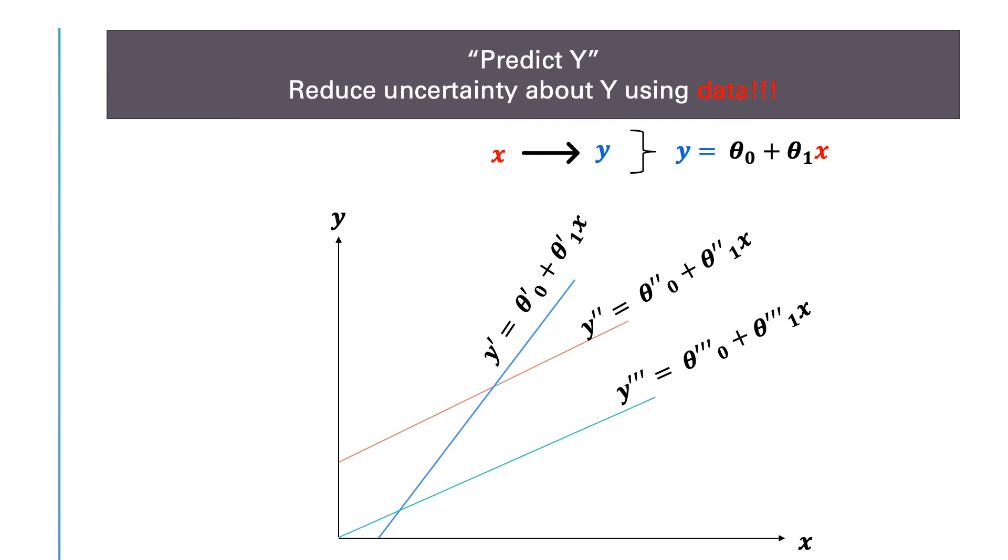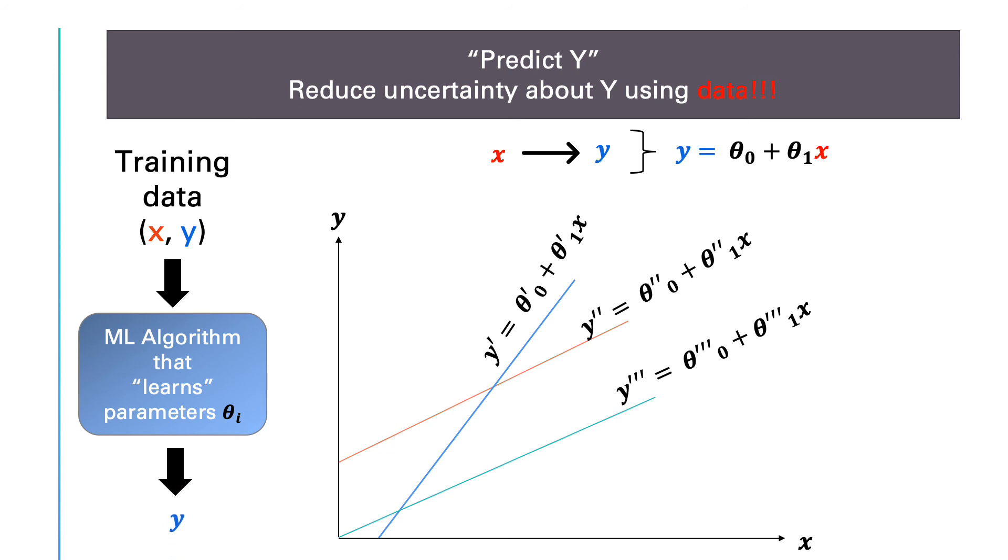The whole idea is that we feed the training data into a machine learning algorithm. The machine learning algorithm uses this training data to tune a function. That is, we learn the parameters of the function. The learned parameters make the function do what you want it to do.